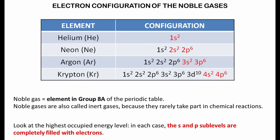What is the electron configuration of noble gases? Noble gas is an element in group 8A of the periodic table. Noble gases are also called inert gases, because they rarely take part in chemical reactions. Look at the highest occupied energy level of 4 noble gases in the table. In each case, the S and P sublevels are completely filled with electrons.